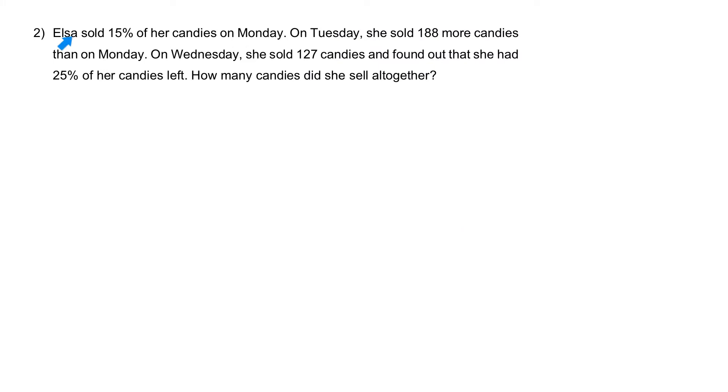Question 2. Elsa sold 15% of her candies on Monday. On Tuesday, she sold 188 more candies than on Monday. On Wednesday, she sold 127 candies and found out that she had 25% of her candies left. How many candies did she sell all together?